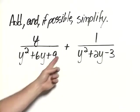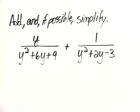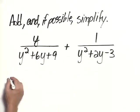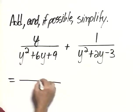To be able to add the two rational expressions, the denominators must be the same. We need to find the least common denominator. In order to do that, we need to factor both of the denominators. So let's write the equivalent rational expressions with factored denominators.